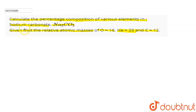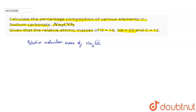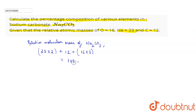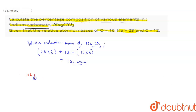First we will find out the relative molecular mass of Na₂CO₃. That will be: relative atomic mass of sodium into 2, plus relative atomic mass of carbon, that is 12, and relative atomic mass of oxygen, that is 16, into 3 — which will give the value 106 amu.